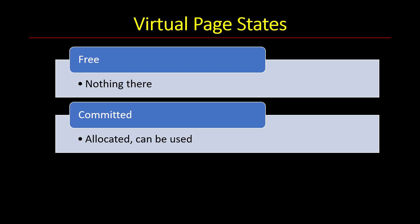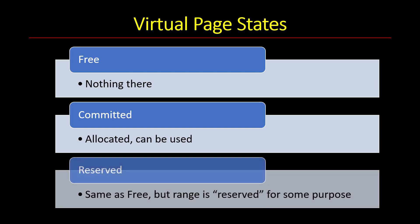That's what we think of as allocated memory — memory you pay for, which means it's limited. There's a system-wide commit limit, which we'll see shortly in Task Manager. Now there's a third page state called reserved, which is somewhere between committed and free. From a CPU perspective it's the same as free — the CPU can't translate the virtual address to physical — but new allocations won't happen within that reserved region.